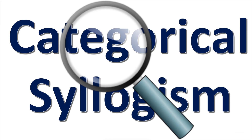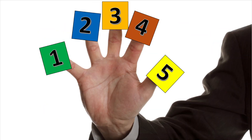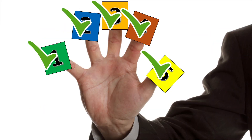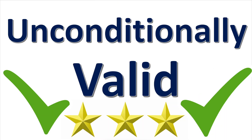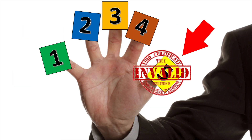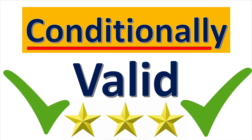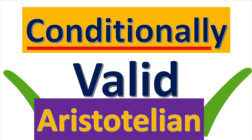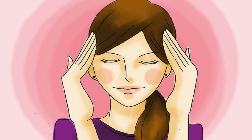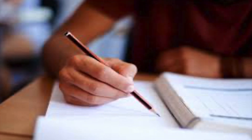You can check the categorical syllogism to see if it breaks any of these five rules. If it does not break any of these rules, then it is unconditionally valid. If it breaks only rule five, then it is conditionally valid from the Aristotelian standpoint. You can memorize these rules, check the description box, or make a note.